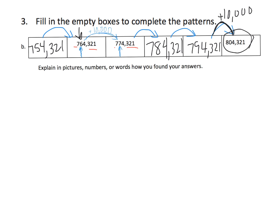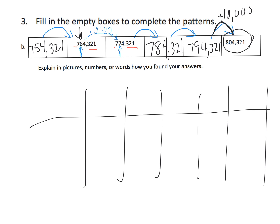If students wanted, they could build a place value chart, take a given number, model it, and then compare using the models — that might make it more visible for some students.